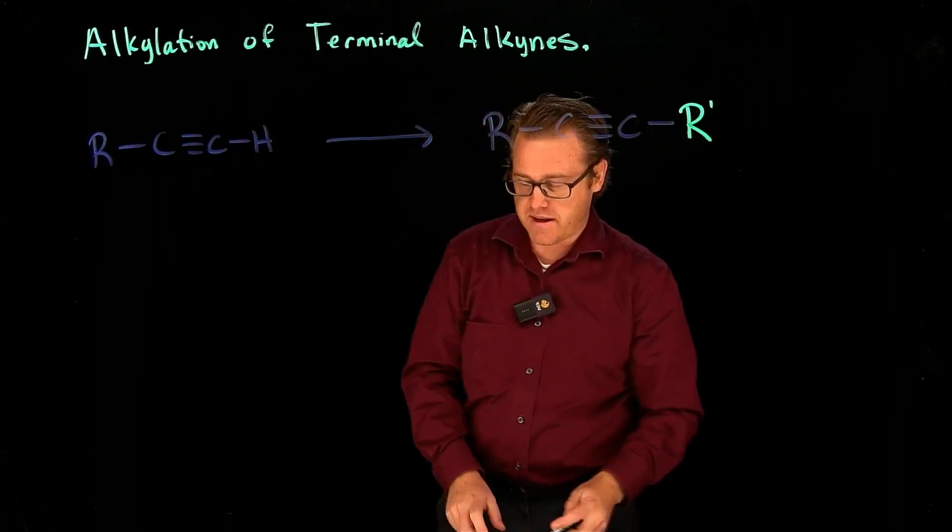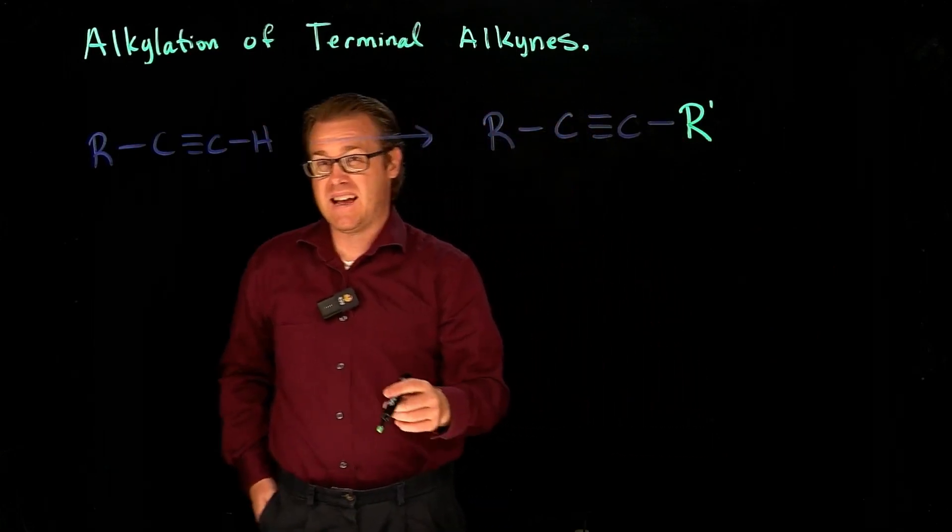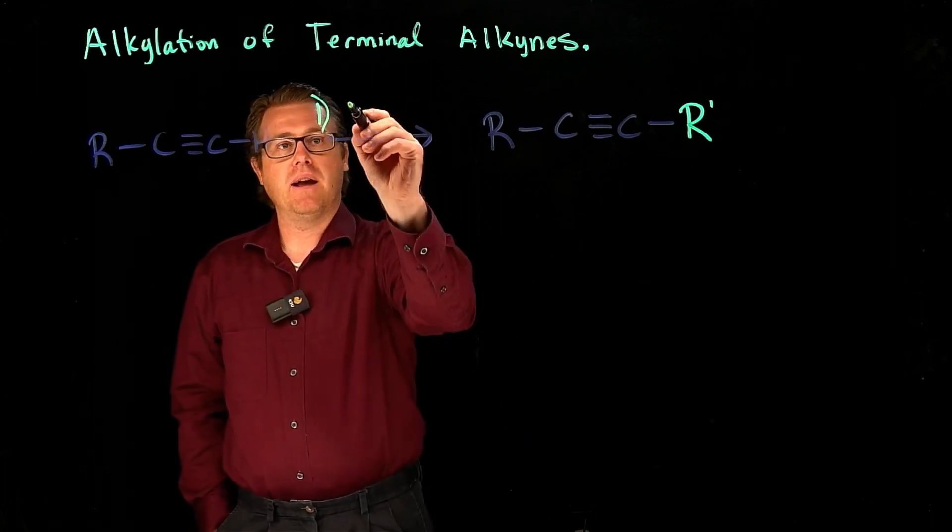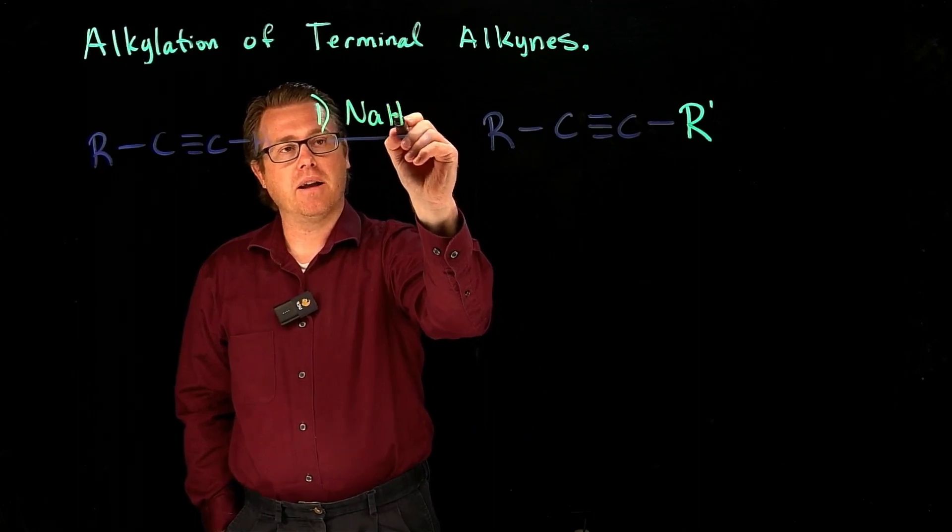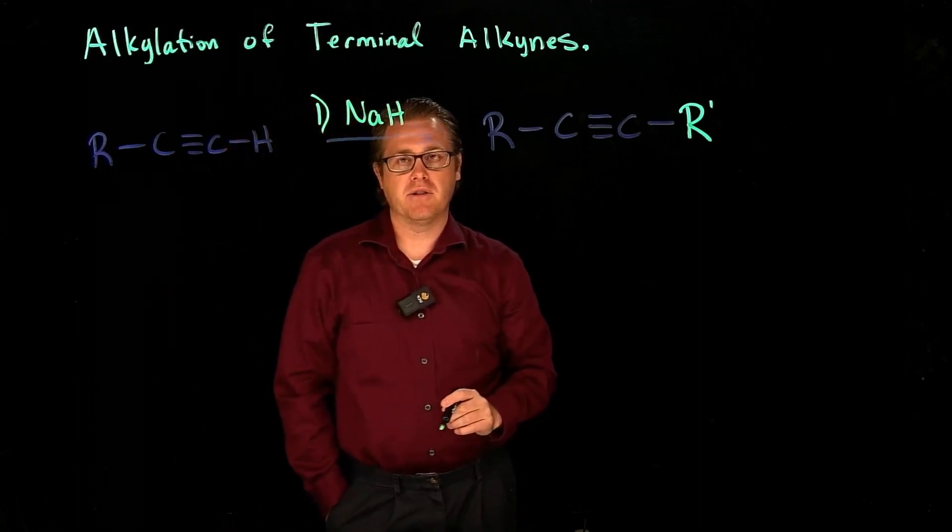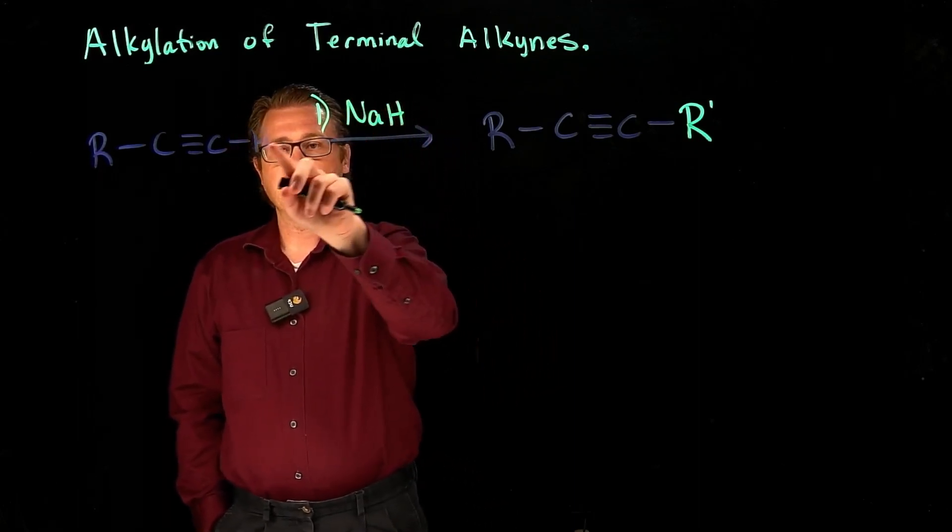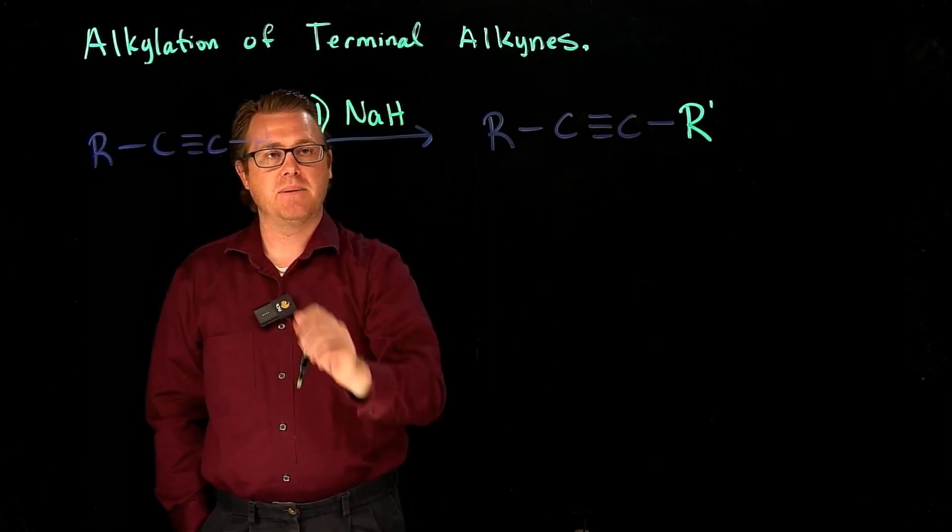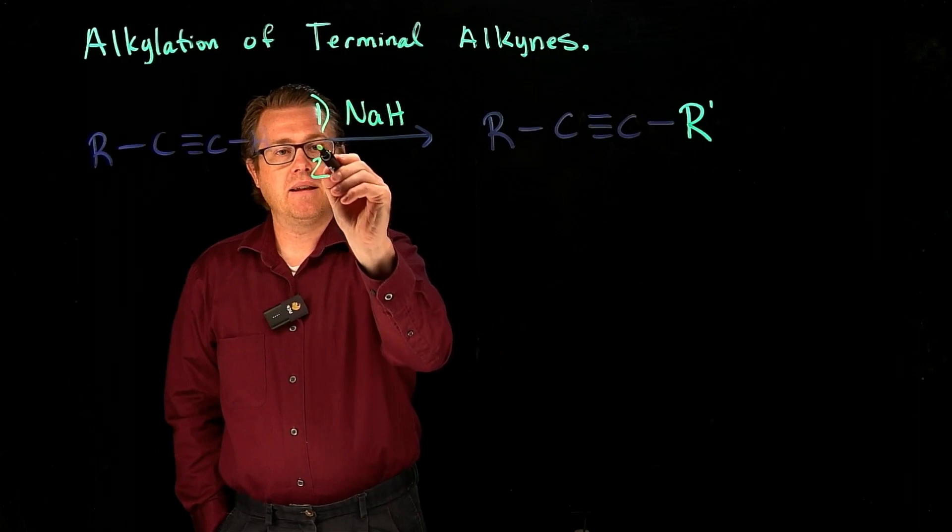Now, in order for that transformation to occur, we have to do this reaction in two steps. Step one, you have to treat it with sodium hydride. And sodium hydride acts as a base to rip off this proton to make the alkynide species. And then step two,